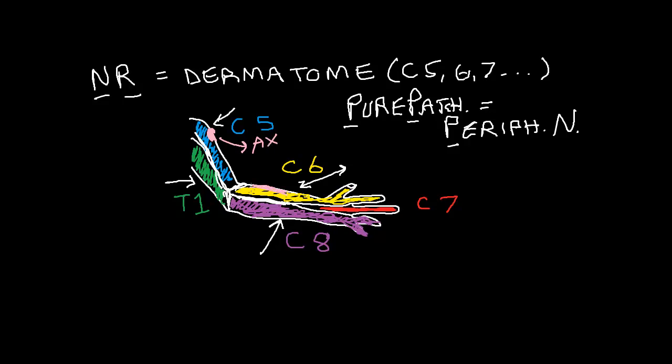The musculocutaneous nerve pure patch lies right over the brachioradialis muscle belly. That's musculocutaneous nerve. The median nerve sits at the lateral index finger, the distal part for median nerve. The ulnar nerve sits in the medial part of the pinky. This is the ulnar nerve.